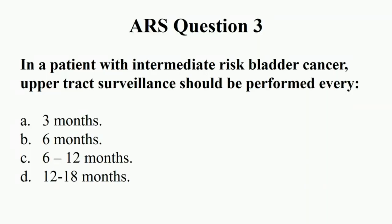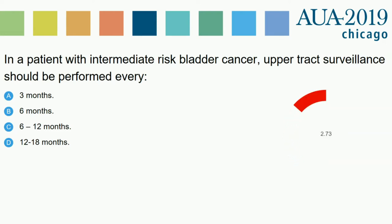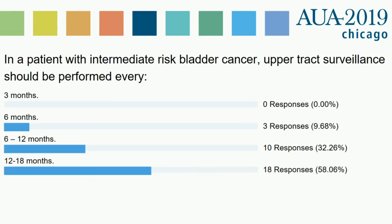Question three: In a patient with intermediate risk bladder cancer, upper tract surveillance should be performed how often? Every three months? Every six months? Every six to twelve months? Or every twelve to eighteen months? It looks like most people are saying twelve to eighteen months, although some said six to twelve.